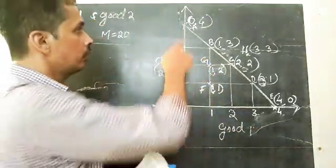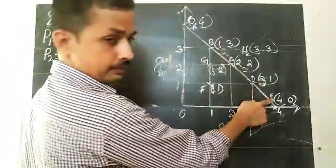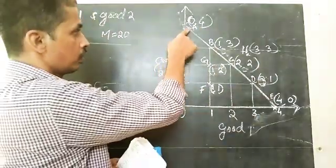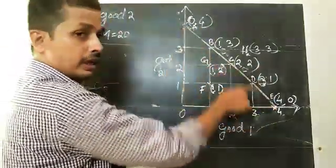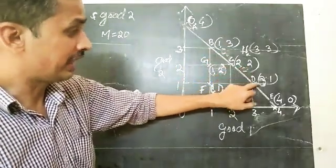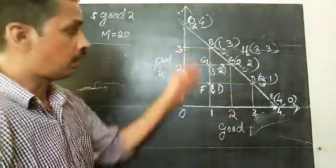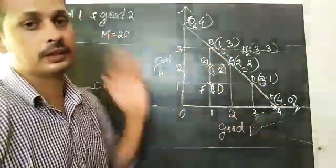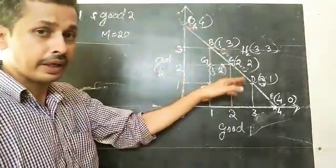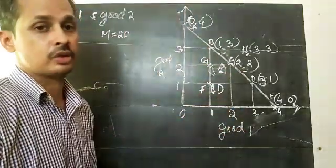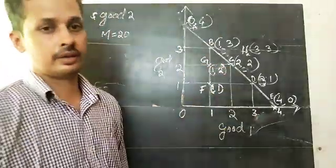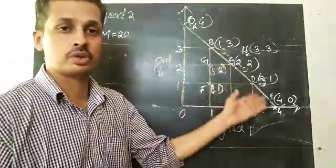The budget line is A-E. The bundles on the budget line are: (0,4), (1,3), (2,2), (3,1), and (4,0). All these bundles can be purchased by the consumer because the cost incurred is exactly equal to the income of the consumer, and therefore the consumer can purchase all these bundles.